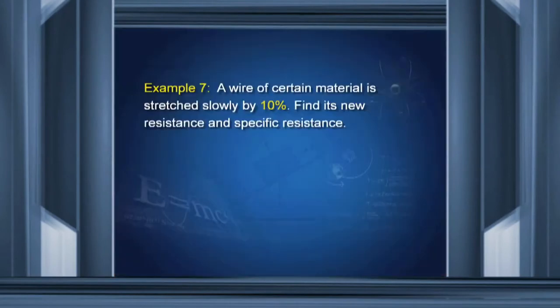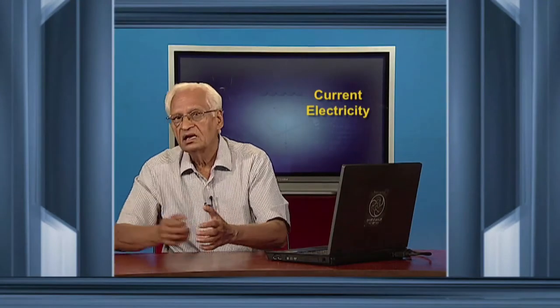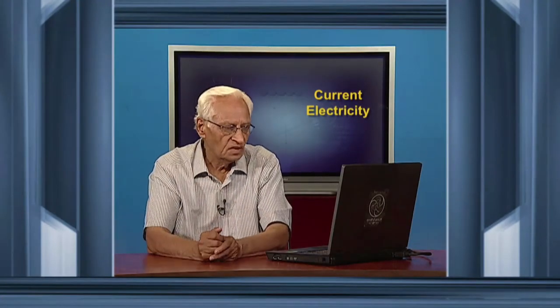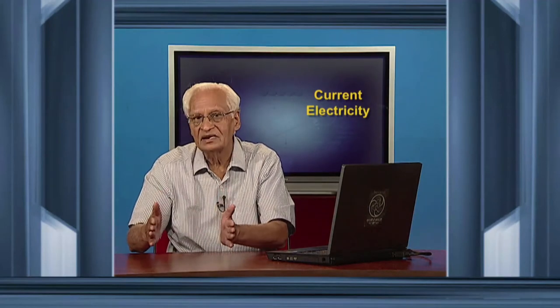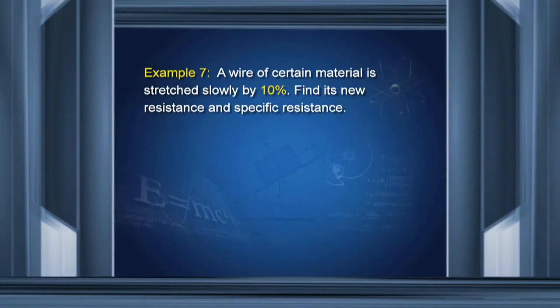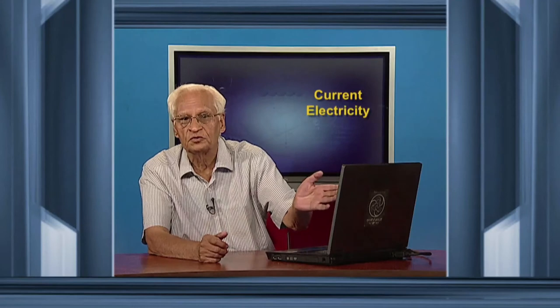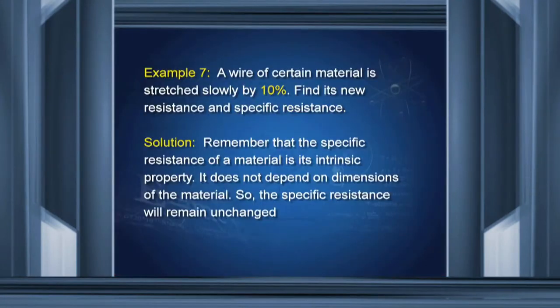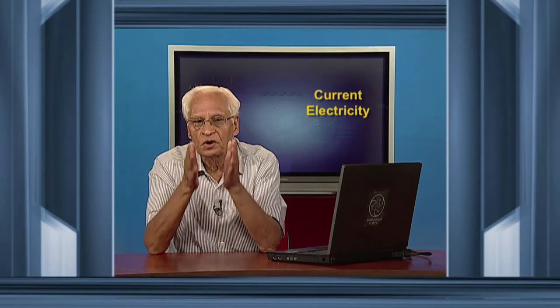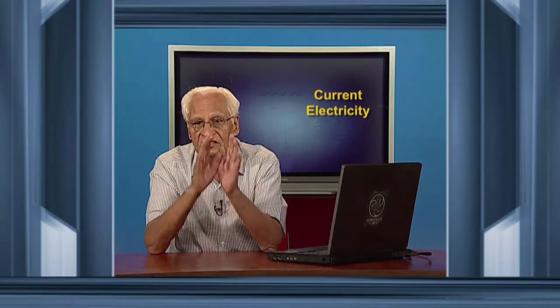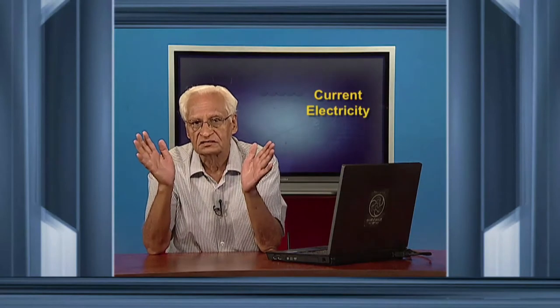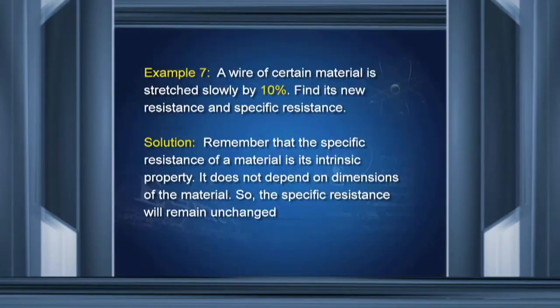A wire of certain material is stretched slowly by 10 percent. So I have a wire and I stretch it slowly by 10 percent. That is, if its length was 10 centimeters, it becomes 11 centimeters. Find its new resistance and specific resistance. Now, here the examiner is trying to confuse you. Specific resistance does not change. I told you in the last lecture that specific resistance is the property of the material. It does not depend upon length or area of cross section. So that does not change.